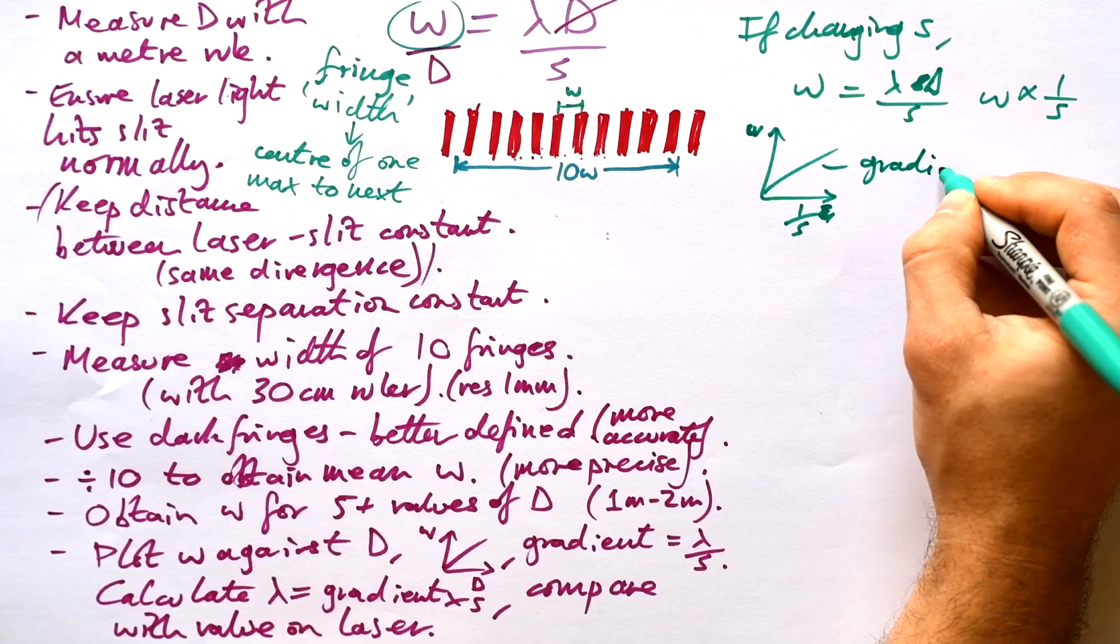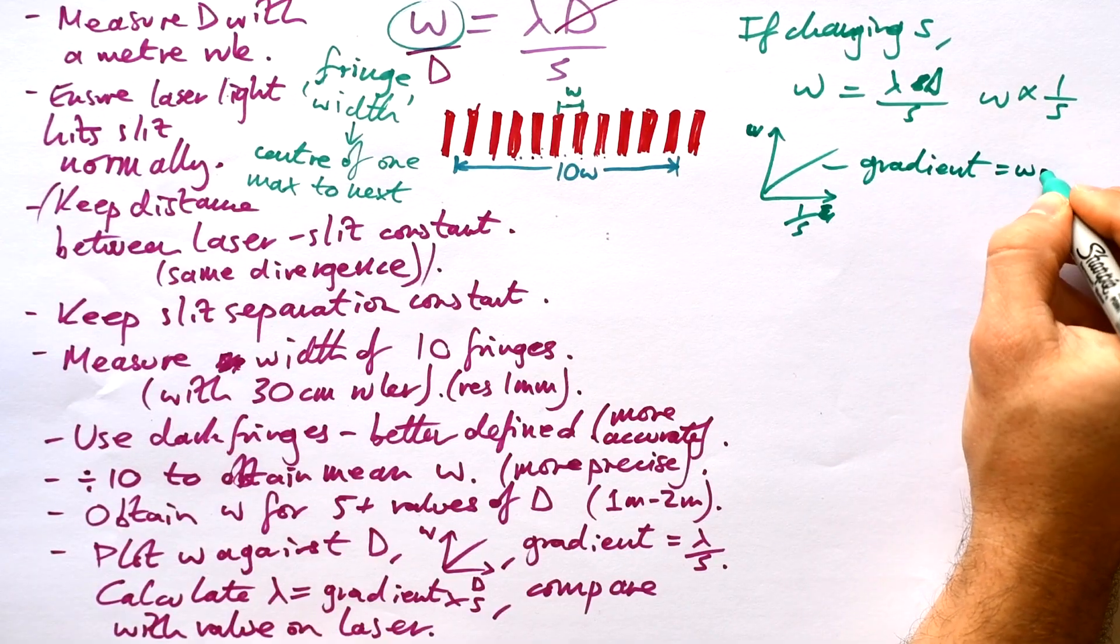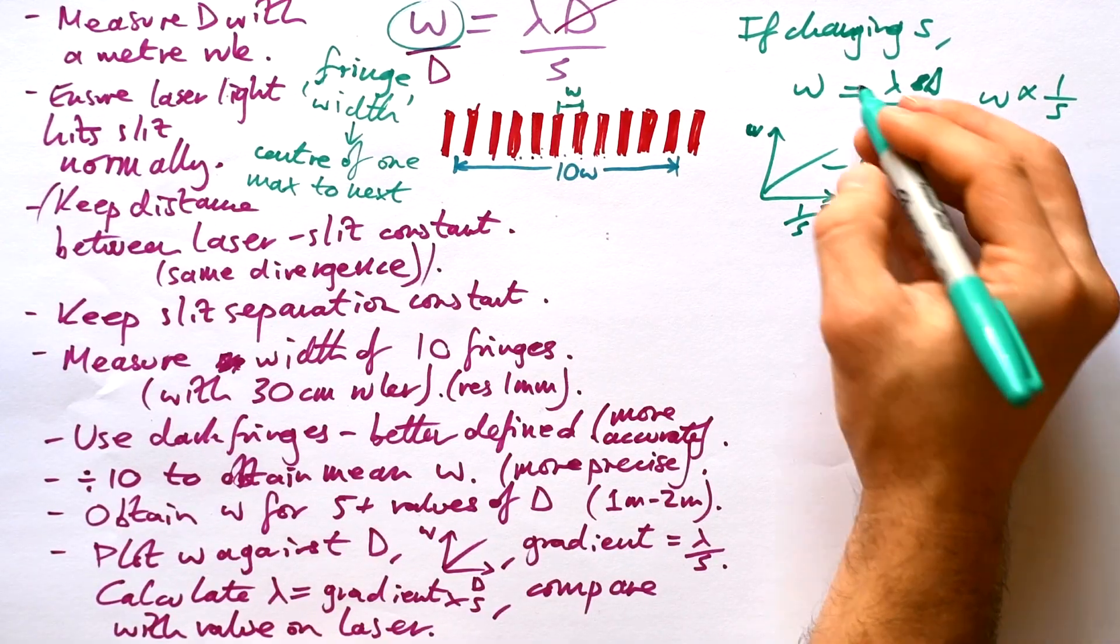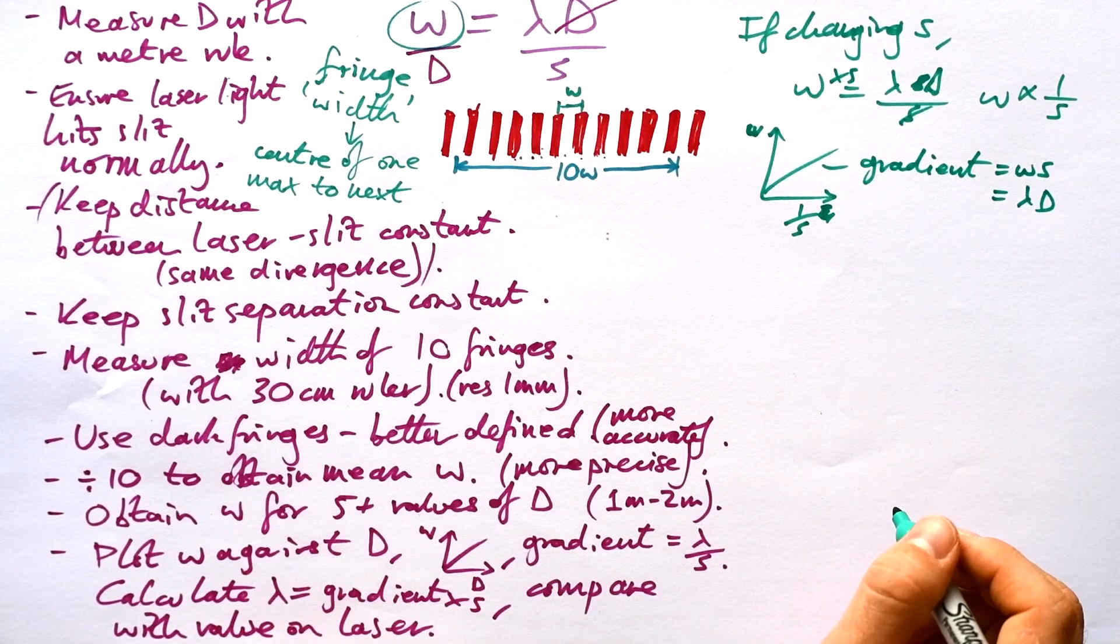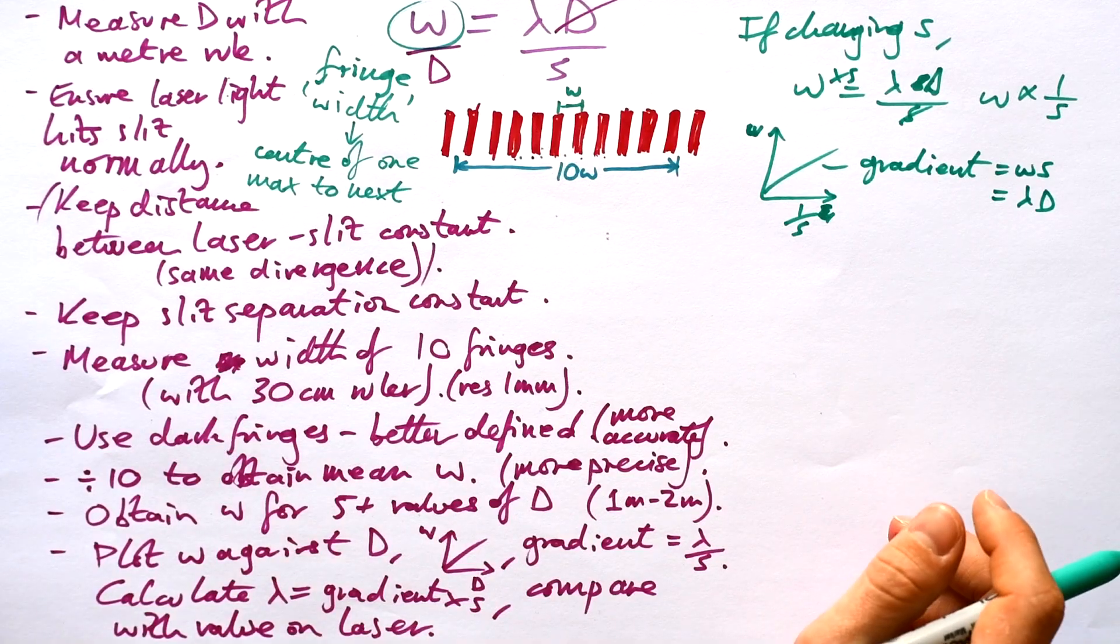Then the gradient is going to be equal to W times S which according to our equation is equal to Lambda D. So we can get our wavelength that way if we're changing S.